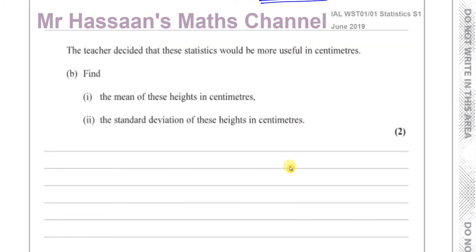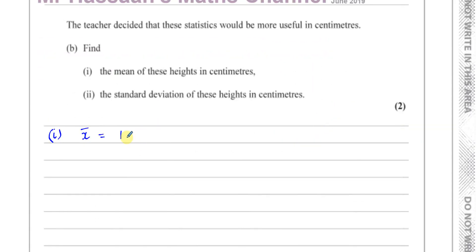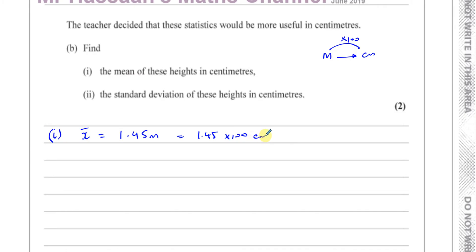Part B says the teacher decided these statistics would be more useful in centimetres, so we want to find the mean and the standard deviation in centimetres. The mean was 1.45 metres. To convert metres to centimetres you simply multiply by 100, so it's 1.45 × 100 = 145 centimetres.